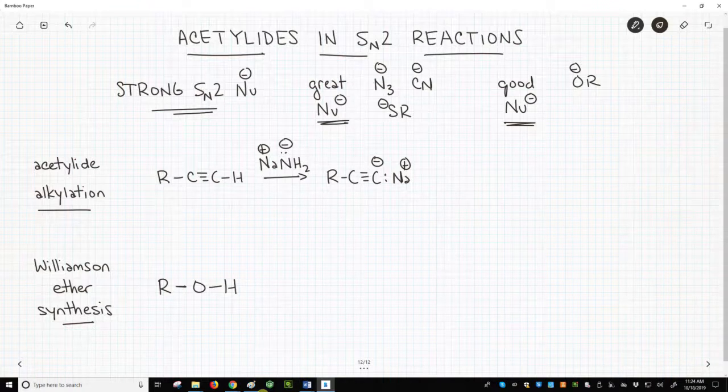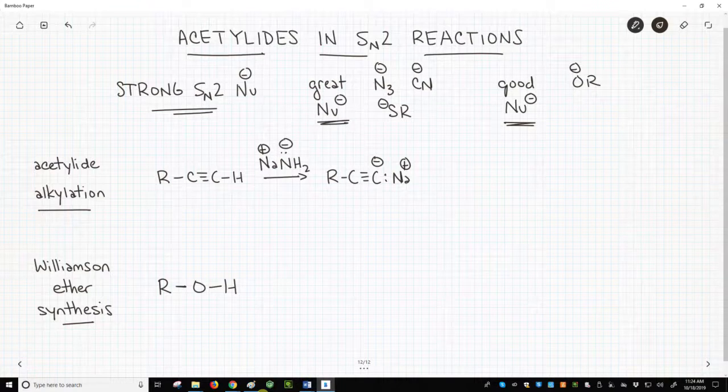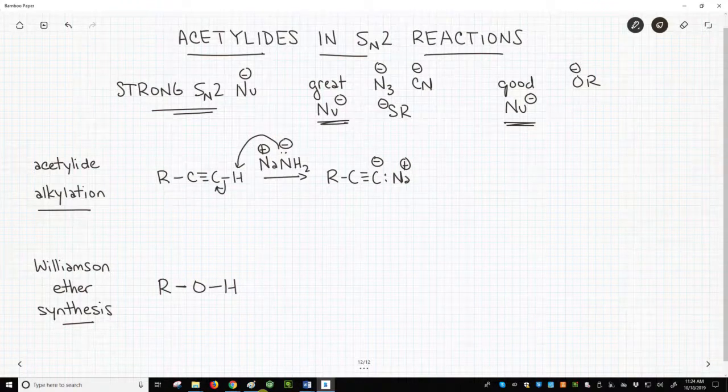Let's now turn our eyes towards acetylides. We make acetylides by deprotonating terminal alkynes with sodium amide, NaNH2.